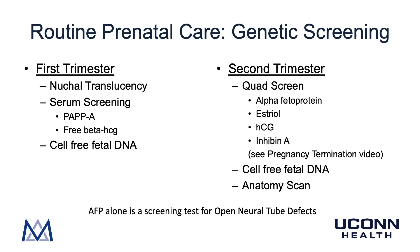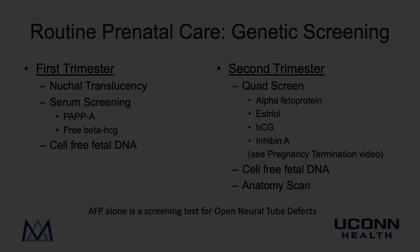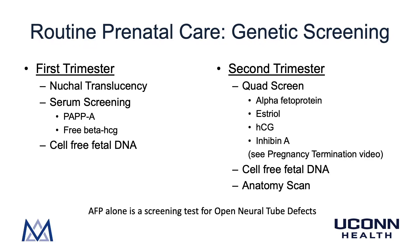In this video, we will briefly cover a routine part of prenatal care called genetic screening. Genetic screening consists of different mechanisms to screen for aneuploidy in pregnancy. The most common aneuploidies screened for are trisomy 21, 18, 13, and monosomy X, also known as Turner syndrome. When thinking about prenatal genetic screening, it can be broken down into mechanisms offered in the first trimester and those offered in the second trimester. In the first trimester, an ultrasound can be performed to measure the fetal nuchal translucency — a specific measurement on the back of the baby's neck performed at 11 to 13 weeks gestation. Increased thickness of the nuchal fold is associated with an increased risk of aneuploidy.